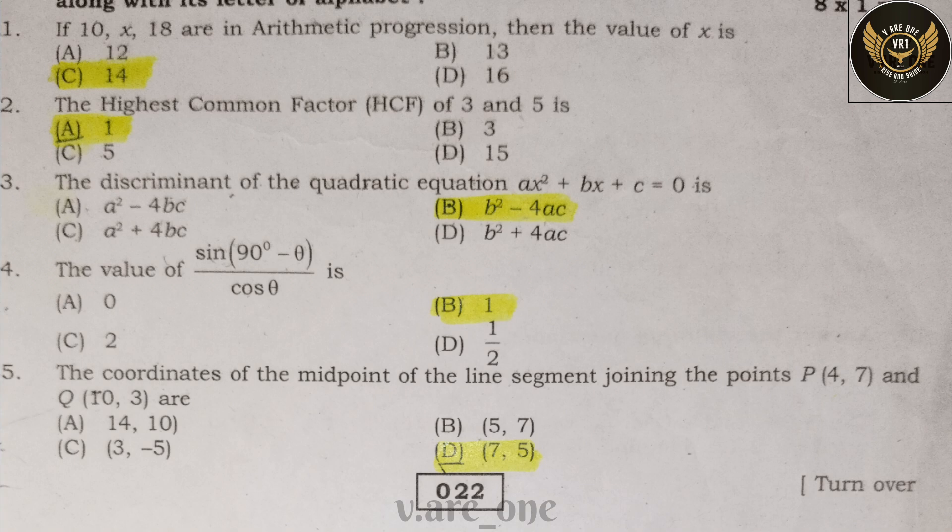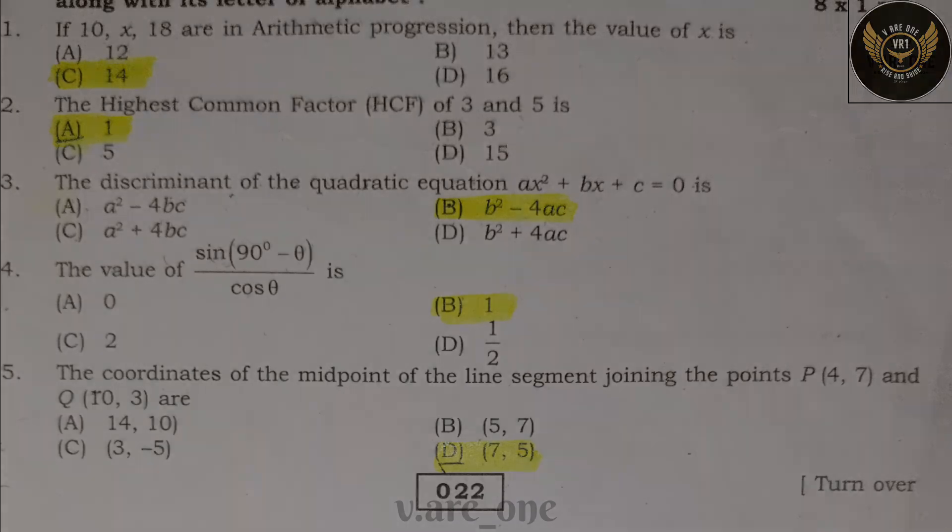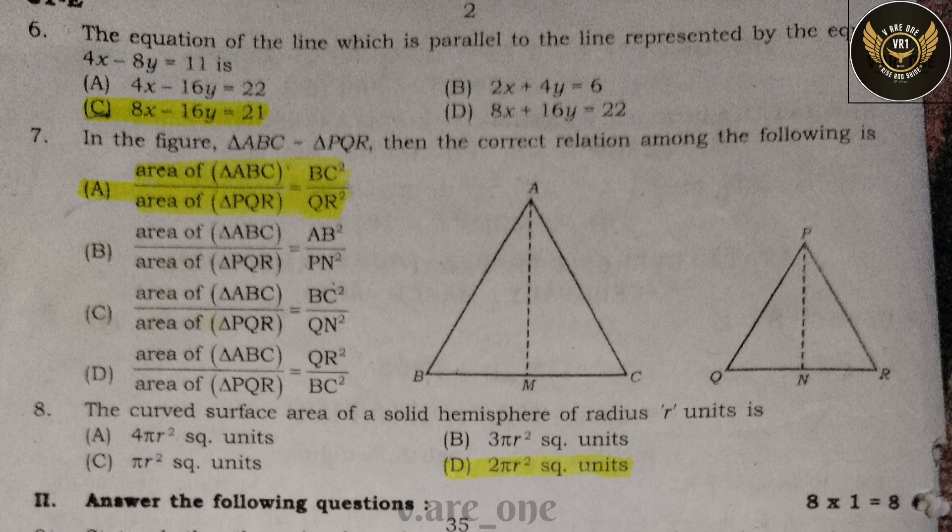Fourth one: the value of sin(90° − θ) divided by cos θ is — answer: B, 1. Fifth one: the coordinates of the midpoint of the line segment joining the points B(4, 7) and Q(10, 3) are — answer: D, (7, 5).